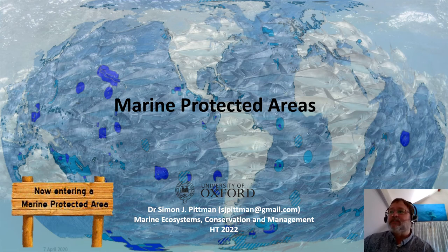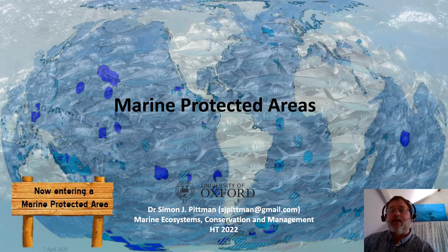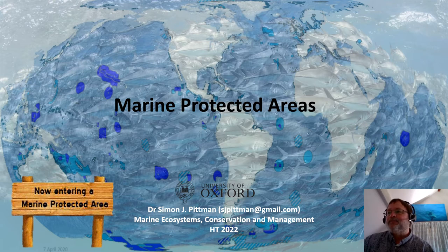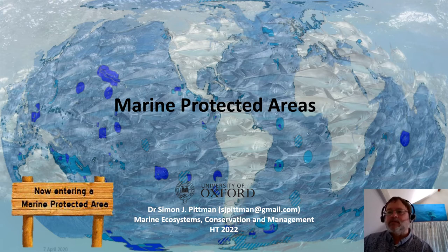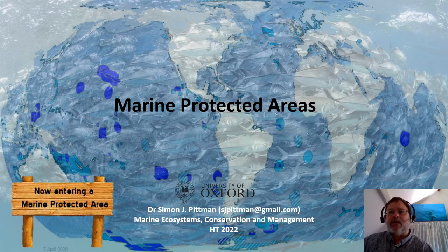Marine protected areas come in all shapes and sizes and exist across a broad gradient of regulatory processes and effectiveness. In this class we will learn about different types of MPAs and also other effective area-based conservation measures, now referred to as OECMs, the growth of MPAs, some of the policy drivers and the design challenges, and then we'll briefly look at performance and touch on some of the social factors and challenges in achieving policy goals such as ecological coherence in MPA networks.